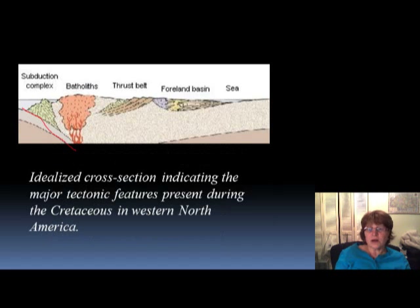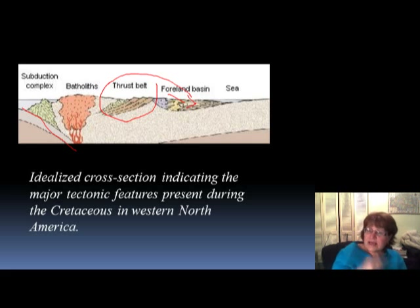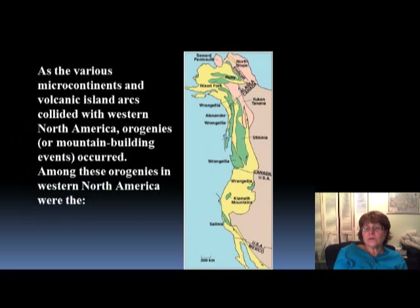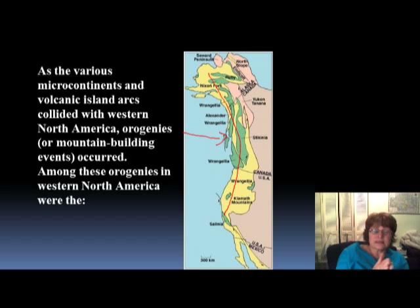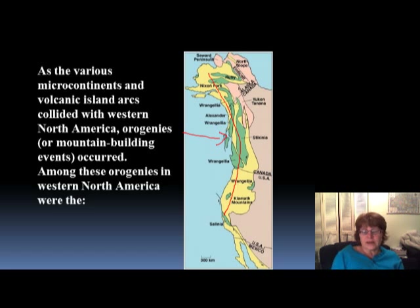Because of the subduction, the whole area was uplifted. There was a big foreland basin toward the middle of the continent, and a lot of granite batholiths were forming during this time. As the oceanic arc collided into North America, all this area was actually allochthonous, which means it came into America and its geology has nothing to do with the North American geology.